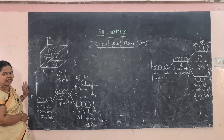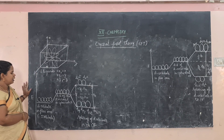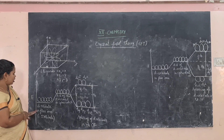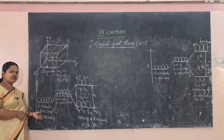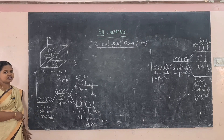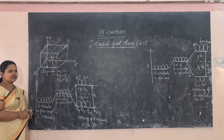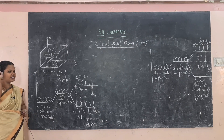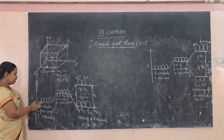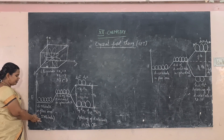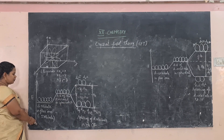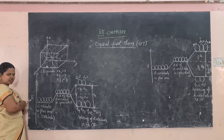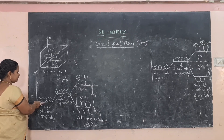The ligands create a negative spherical field around the central metal atom. In the free ion, the five d-orbitals are degenerate — meaning they have the same energy. These five orbitals are: dxy, dyz, dxz, dx²-y², and dz².